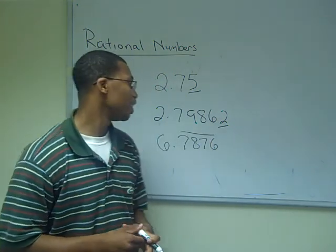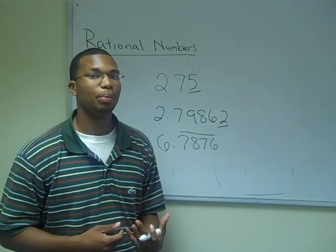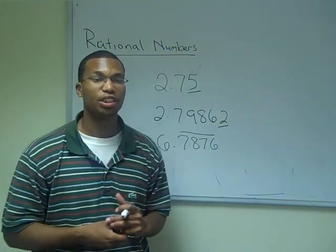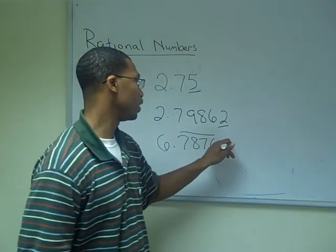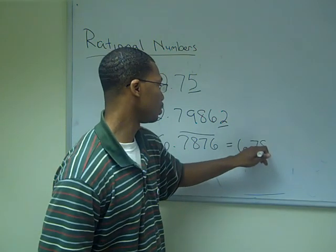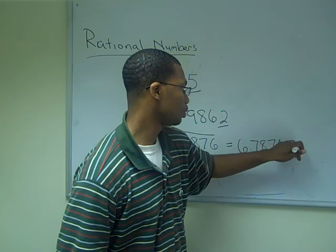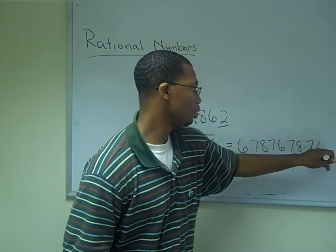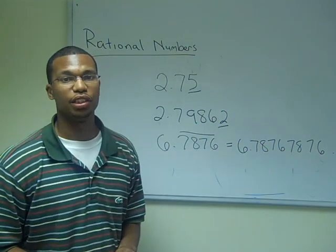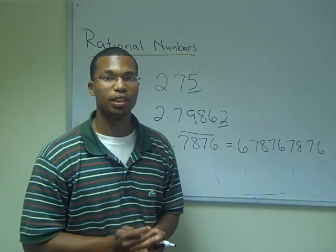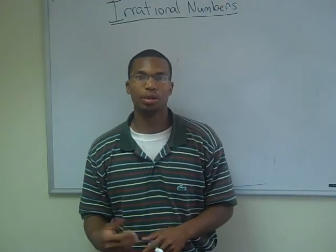The number 6.7876 with a bar over it — that's an example of something that can go on to infinity. The bar indicates that this number would just repeat its same pattern after it gets to the digit of 6. So therefore this number is terminating, making it a rational number.